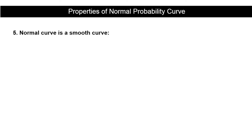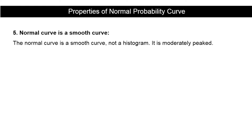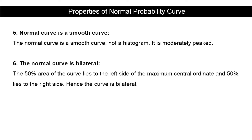The fifth property is that the normal curve is a smooth curve — it is not a histogram and it is moderately peaked.